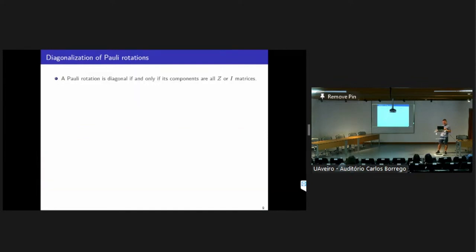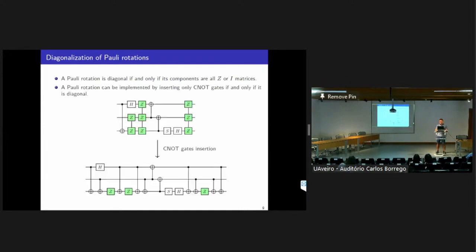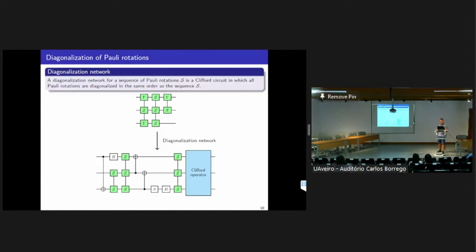A parity rotation is said to be diagonal if all its elements are parity Z matrices. A diagonal parity rotation can be implemented using only CNOT gates. In a circuit where all the parity rotations are diagonal, we can insert only CNOT gates to finish the implementation. A circuit in which all parity rotations are diagonal is called a diagonalization network.